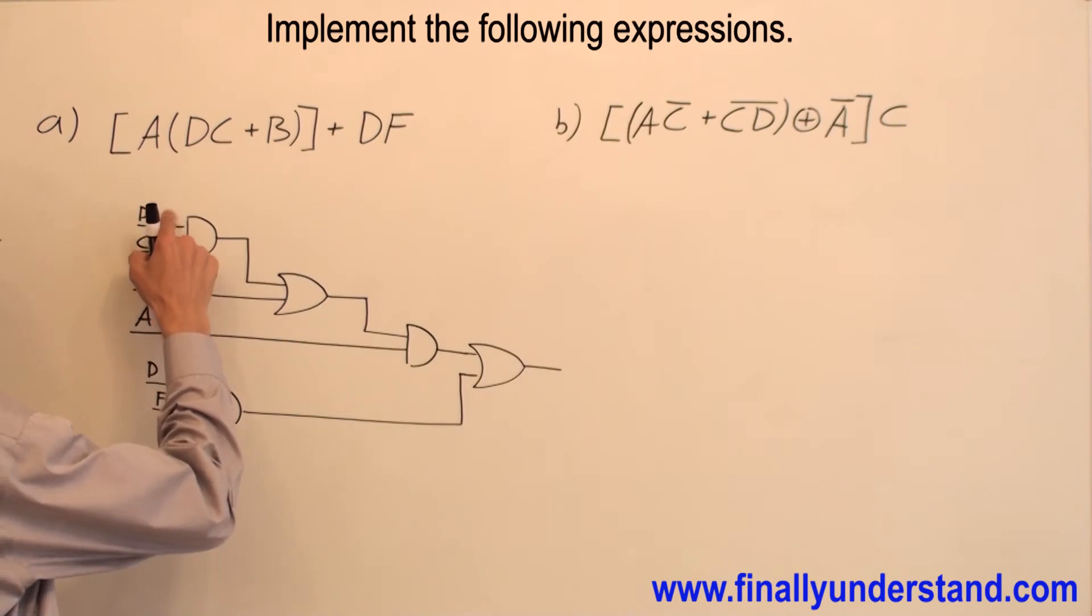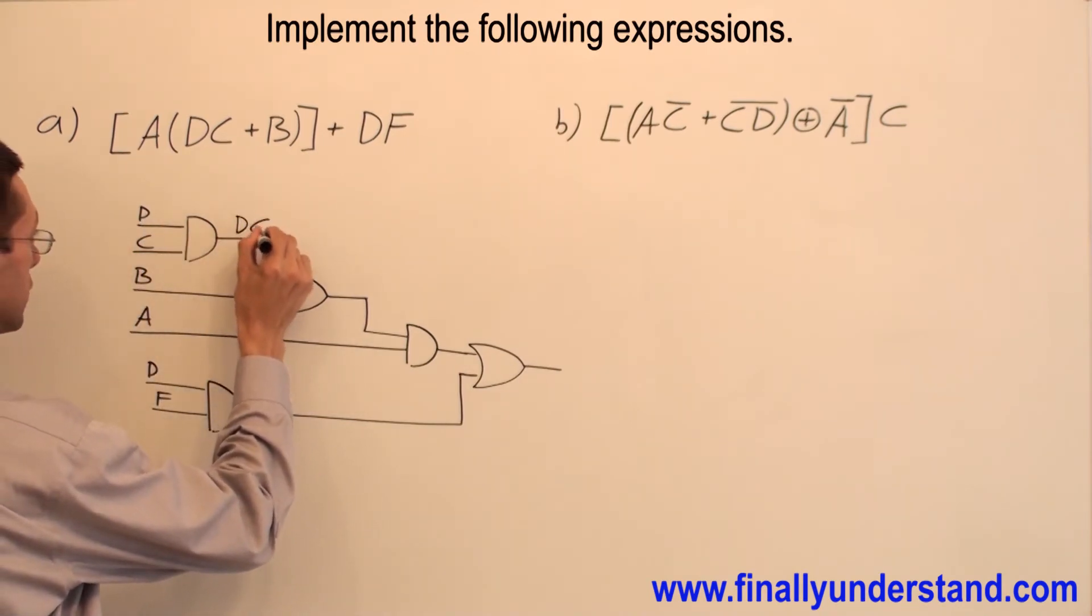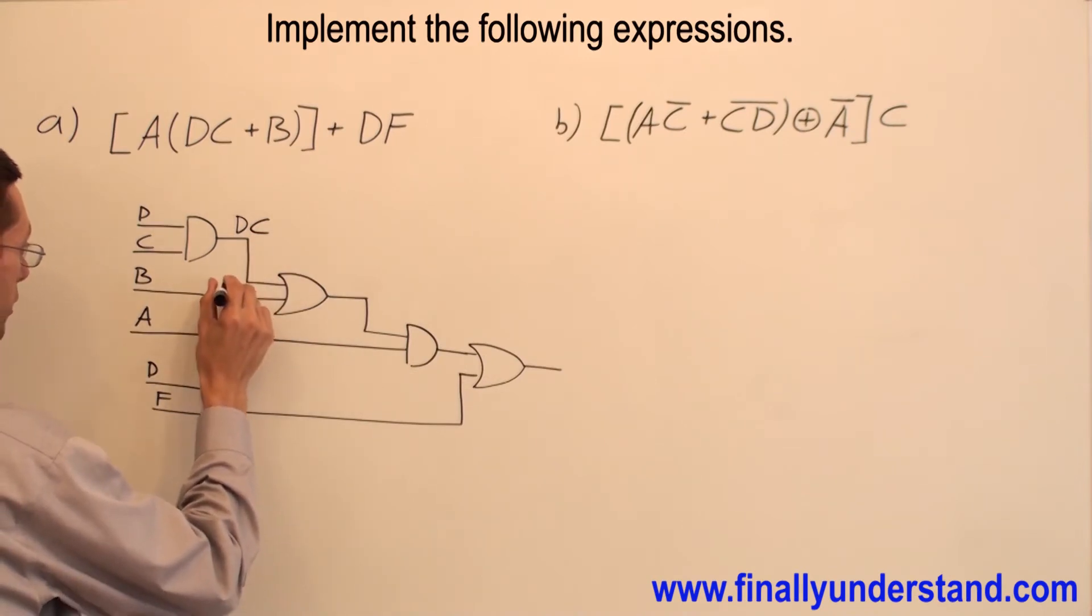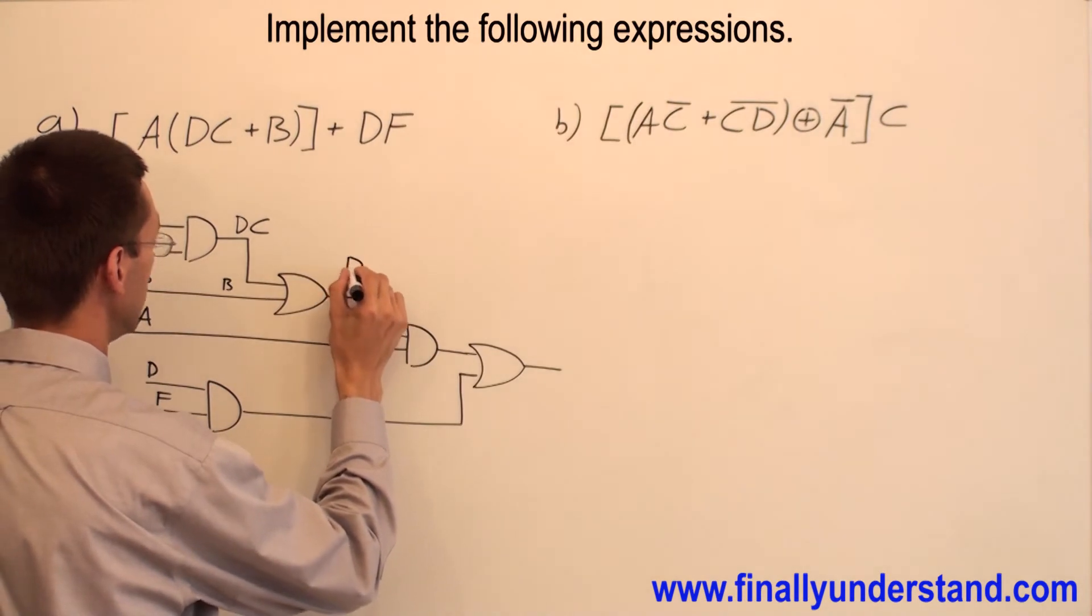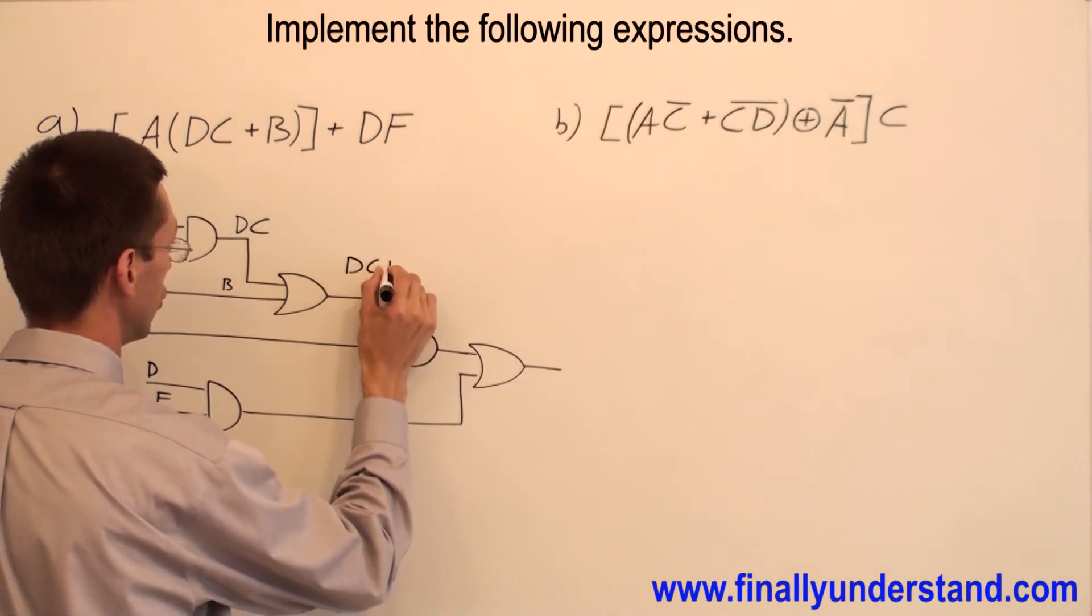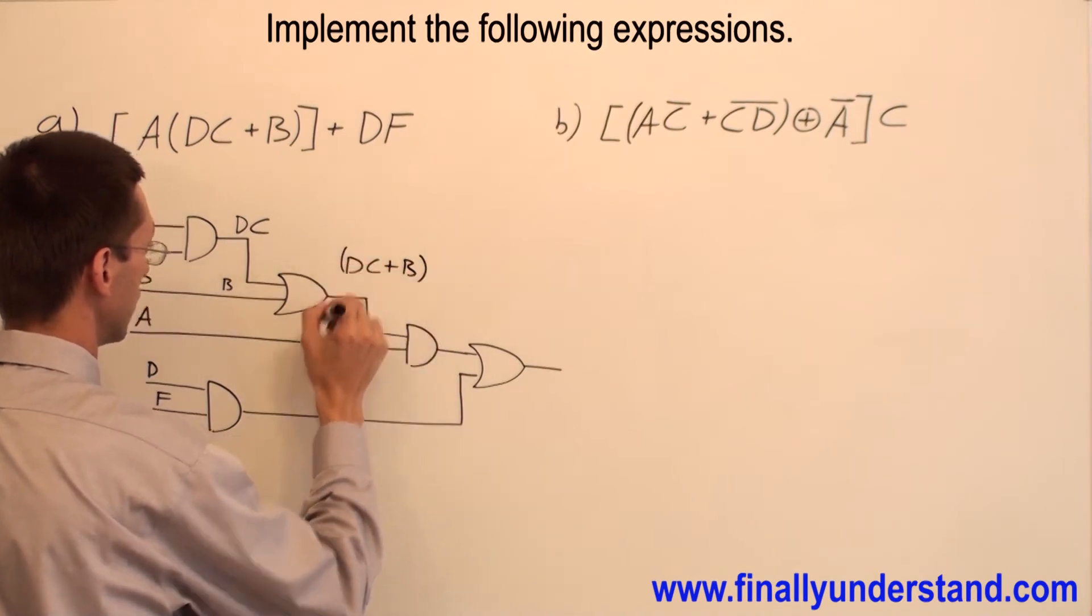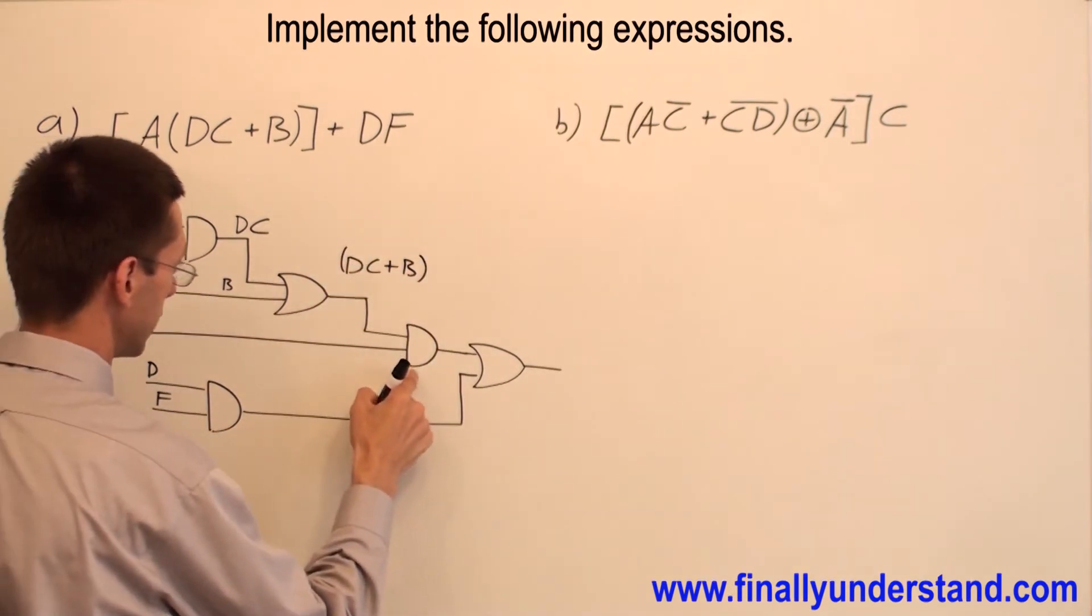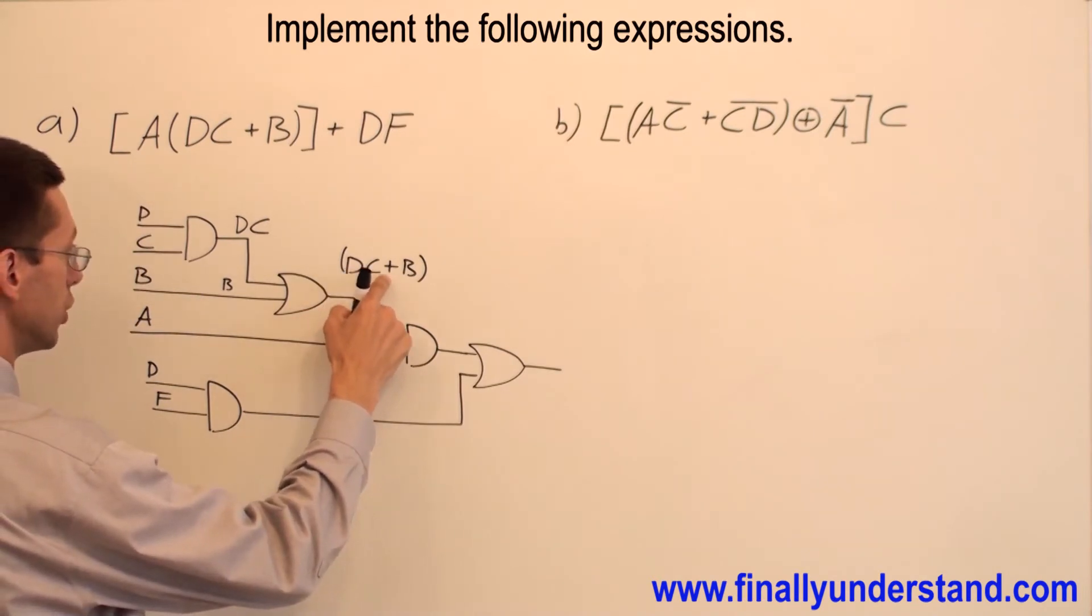At the output of this NAND gate, I'm going to have D NAND C. B will go over here. And I'm going to have DC ORed with B.